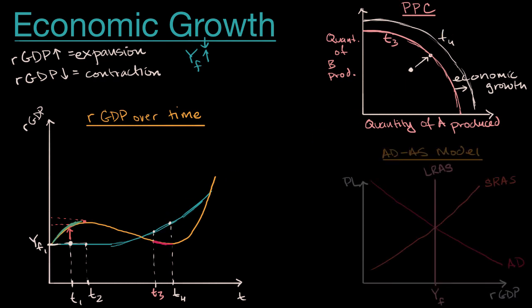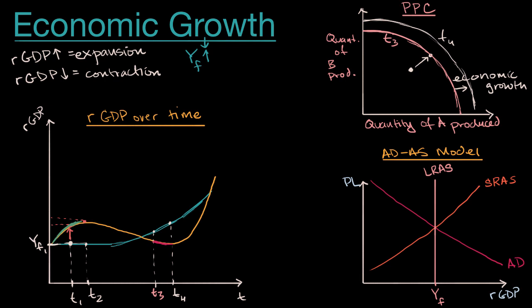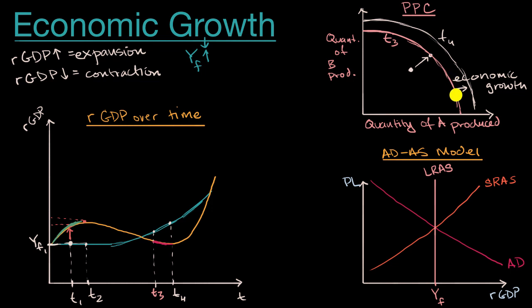We can also think about the same idea using our aggregate demand or aggregate supply model. In the short run, because of a demand shock or a supply shock, we could be operating to the left or right of our full employment output, creating positive or negative output gaps. But over time, we're going to gravitate back to this full employment output. So as long as our production possibilities curve or our long run aggregate supply curve is not changing, we are not seeing economic growth.